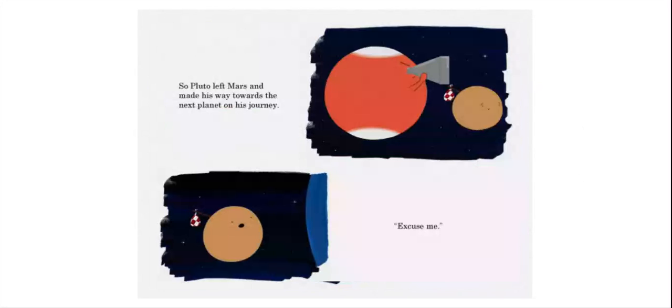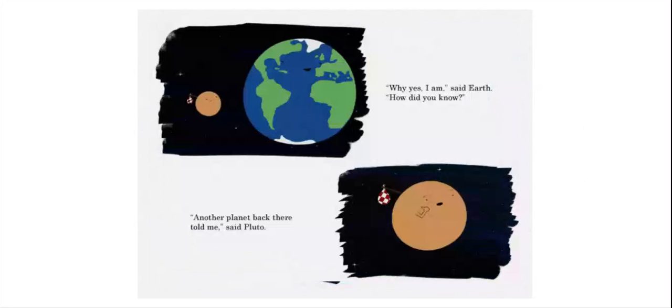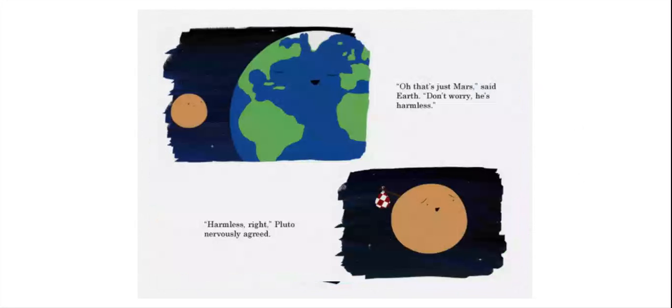So Pluto left Mars and made his way towards the next planet on his journey. Excuse me. Are you Earth? Why, yes, I am, said Earth. How did you know? Another planet back there told me, said Pluto. I hear you talking about me, shouted the red planet from far away. Oh, that's just Mars, said Earth. Don't worry, he's harmless. Harmless, right, Pluto nervously agreed.